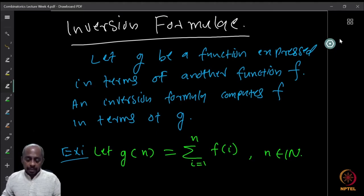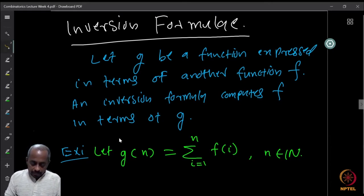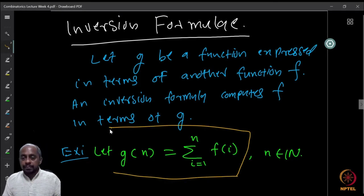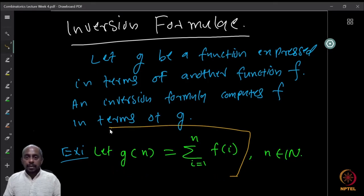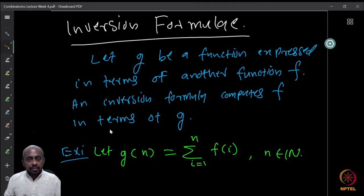This is an inversion formula. Let us look at a very basic example to begin with. Suppose g(n) is equal to the summation i equals 1 to n of f(i). This is given to you. For every natural number n you have this defined — g is defined for every natural number n and it is the summation of f(i) where f is some function.